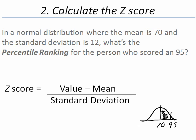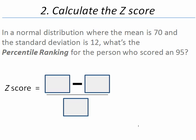Our formula for the z-score is value minus the mean divided by the standard deviation. Let's go ahead and fill it in. What goes in this top left box? The value. Our value is 95. What goes in the top right box? The mean, and the mean is 70.